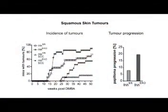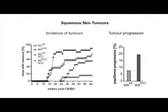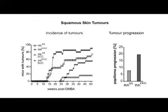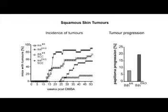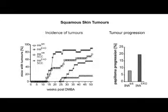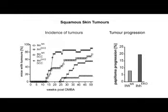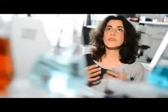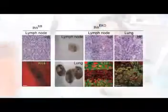We also investigated if Indian Hedgehog is important for the progression of benign papilloma into malignant squamous cell carcinoma. Surprisingly, epidermal deletion of Indian Hedgehog results in a strong increase in the formation of squamous cell carcinomas, with significantly more mice displaying malignant tumors and an increased number of papilloma progressions into carcinomas. In addition, squamous cell carcinomas of Indian Hedgehog knockout mice frequently exhibited a more invasive pattern of tumor growth.